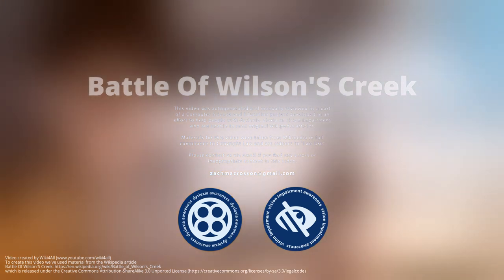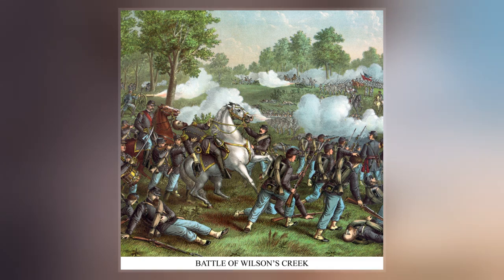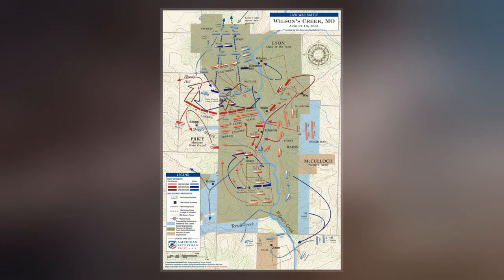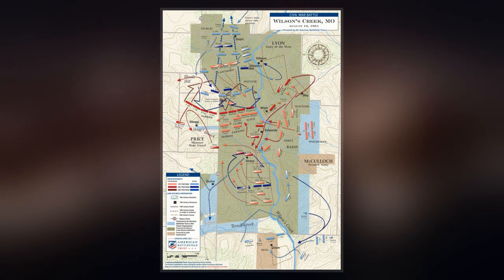The Battle of Wilson's Creek, also known as the Battle of Oak Hills, was the first major battle of the Trans-Mississippi Theater of the American Civil War. It was fought on August 10, 1861, near Springfield, Missouri.